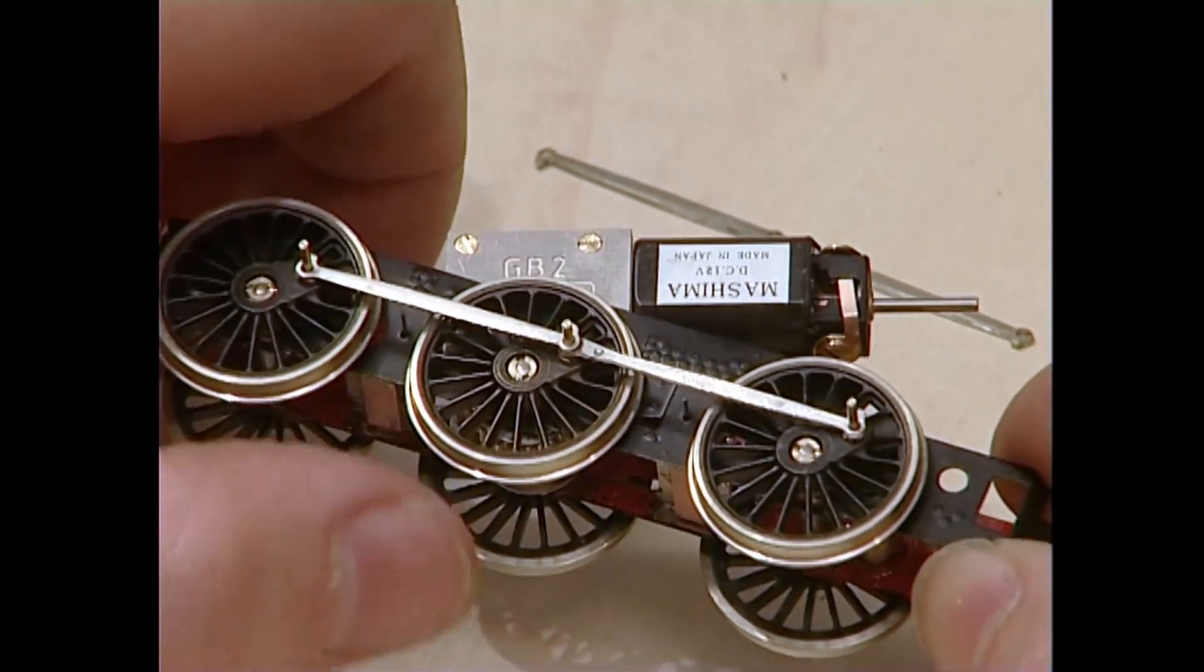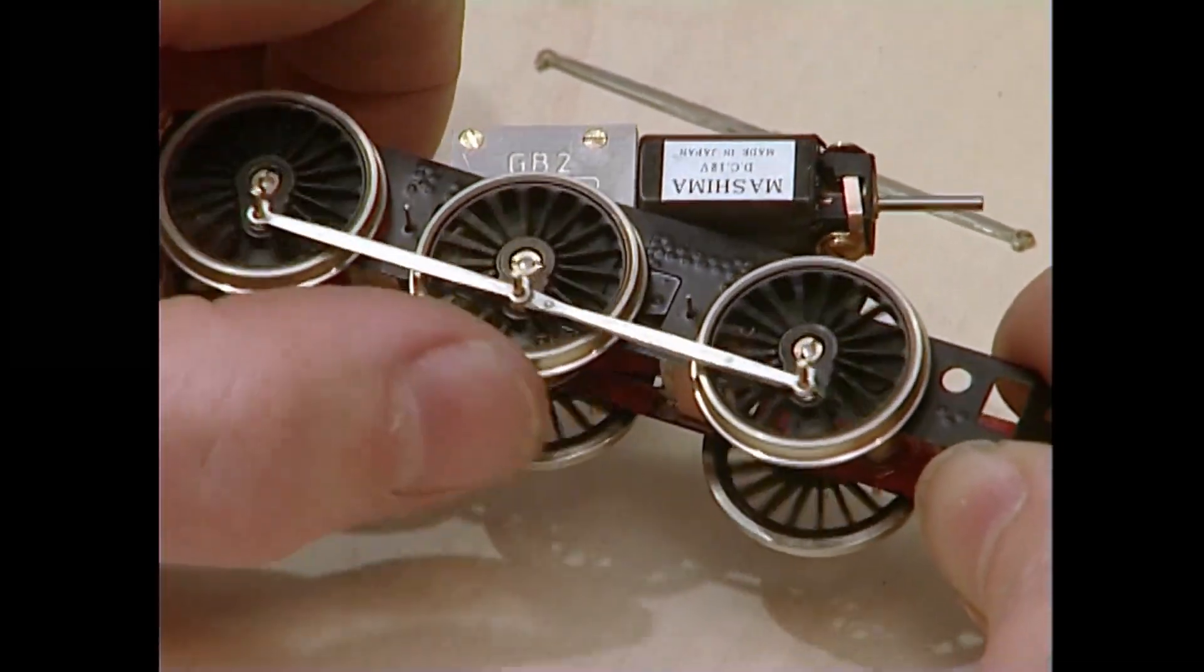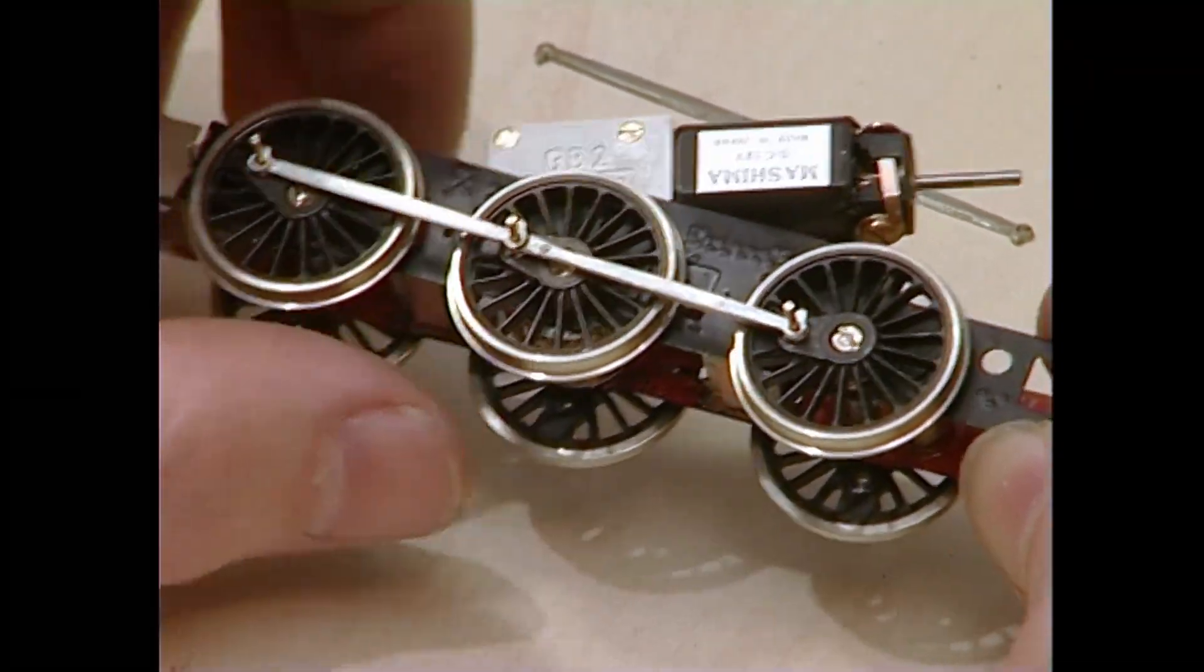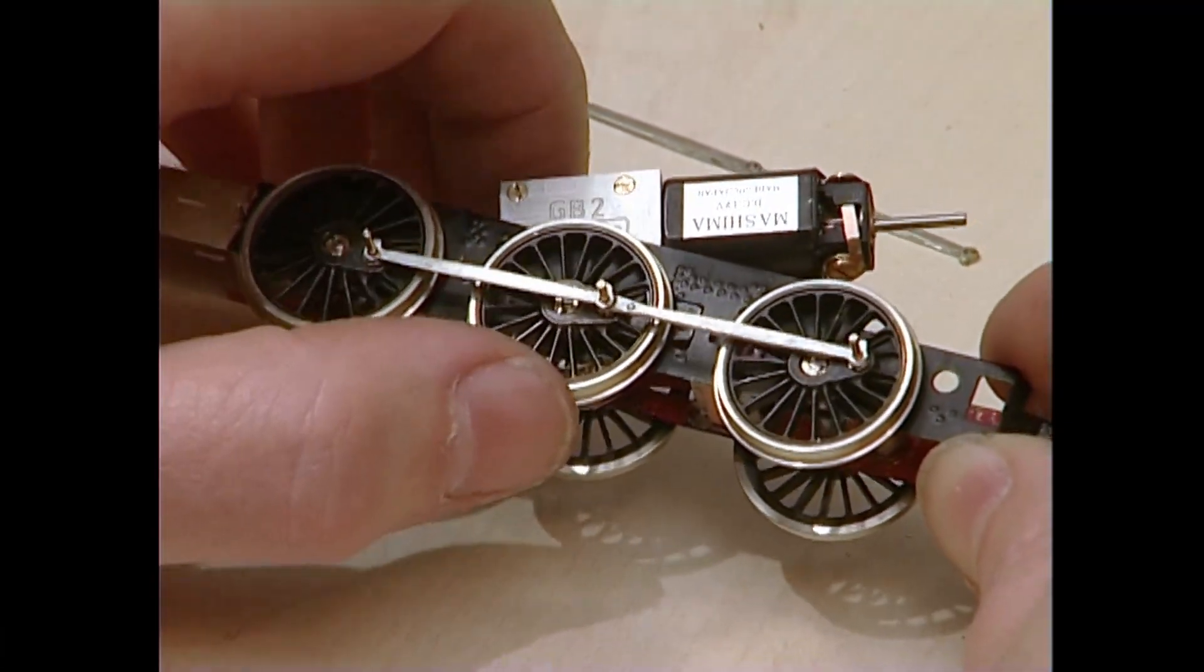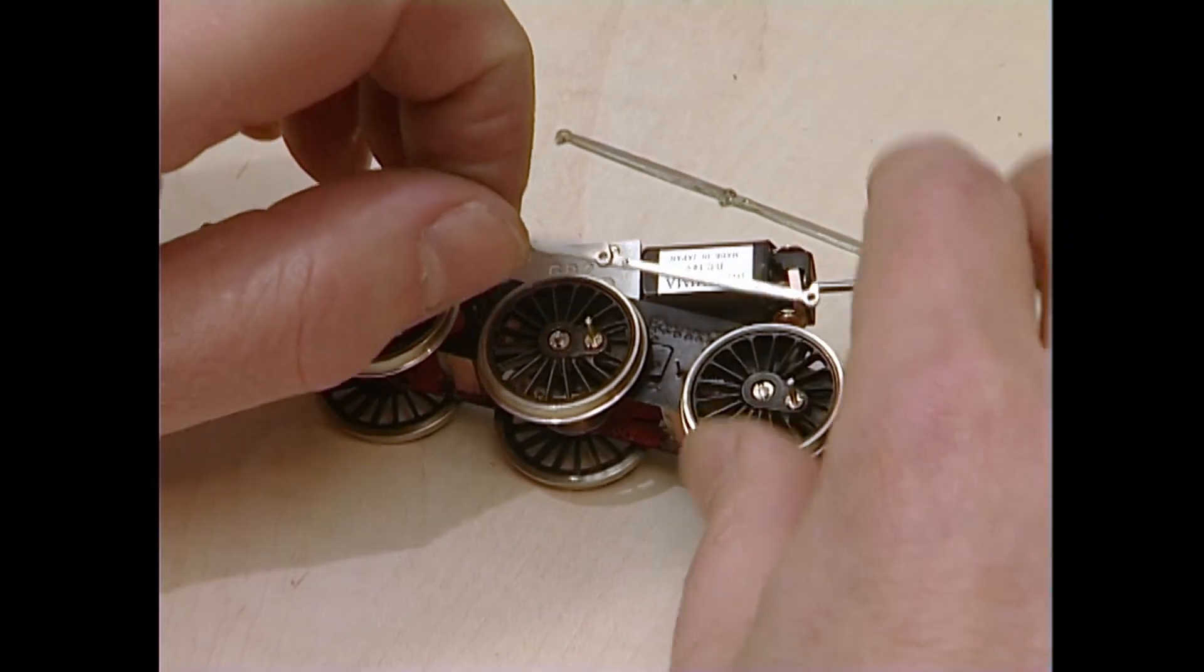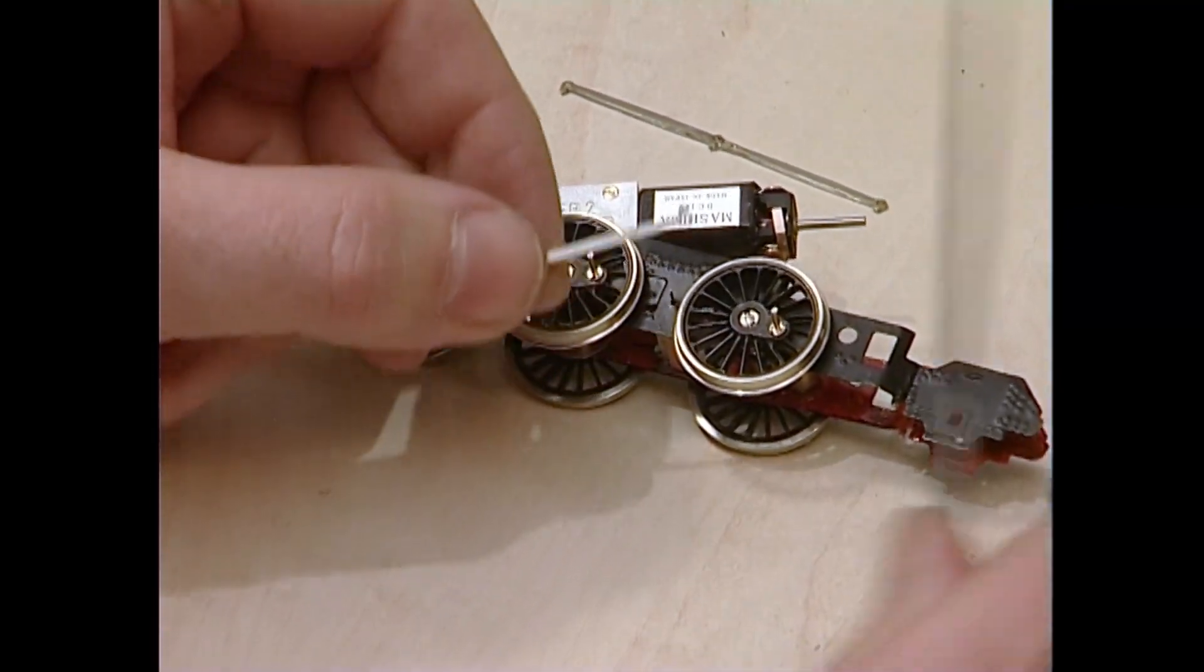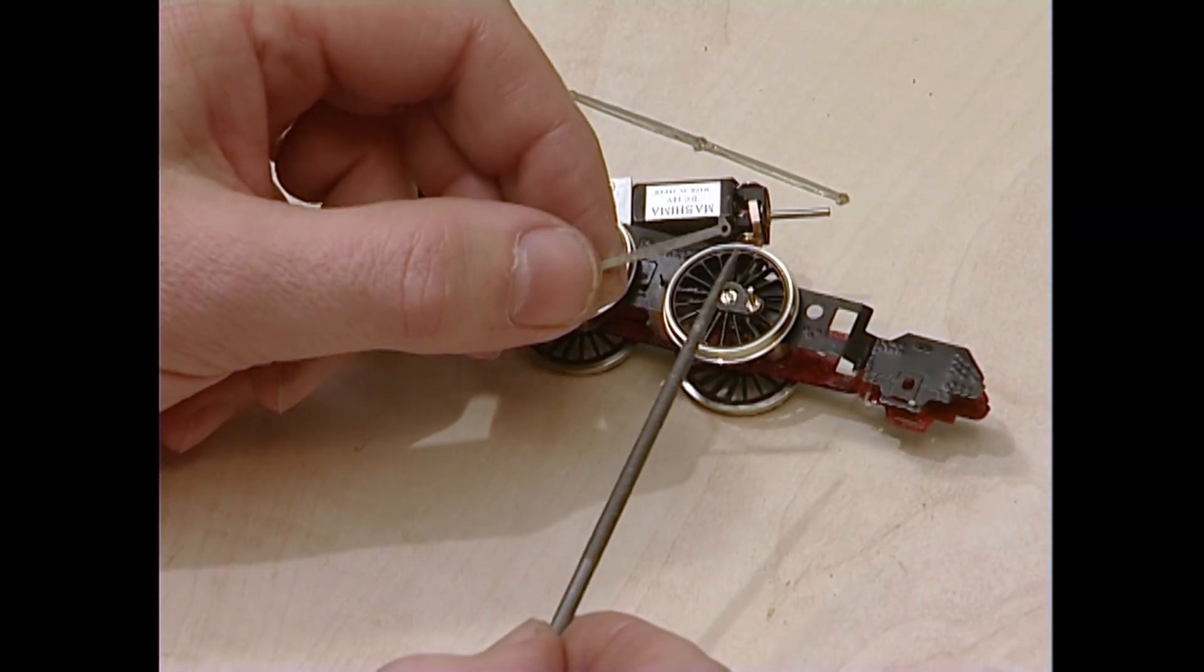Just turn them. Ideally, the wheels should revolve quite happily, like that. If you end up with a tight spot, and if it is, it's going to be at three o'clock or nine o'clock, then you might just have to ease one of these holes with a mousetail file.